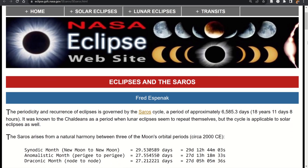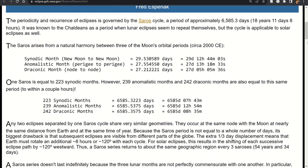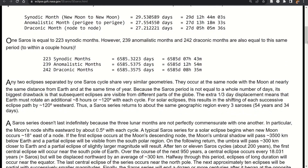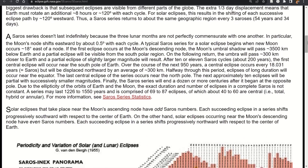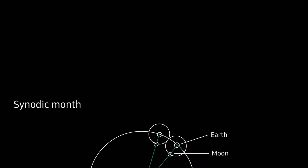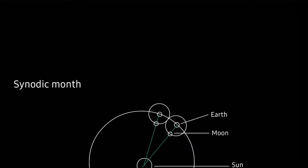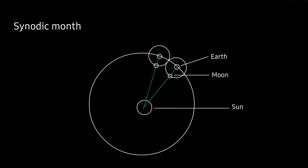To understand the Saros cycle, we have to understand the three orbital periods of the Moon. The first orbital period is called the synodic month. To understand the synodic month, we have to check the position of the Sun, Earth, and the Moon as projected on the ecliptic plane — the plane in which the Earth is orbiting around the Sun.